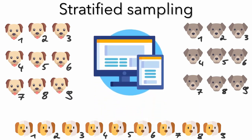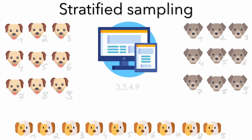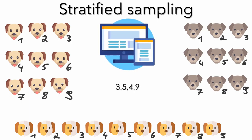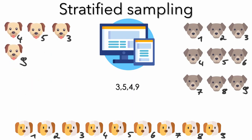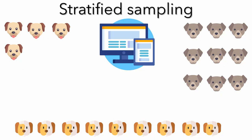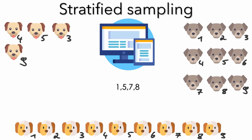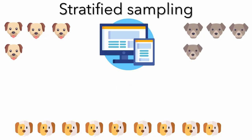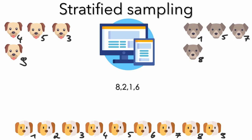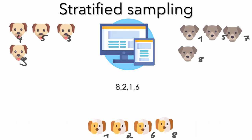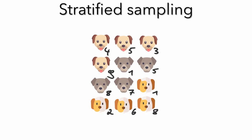Now every dog got a number and we can use simple random sampling to choose the dogs without any bias. These are our first numbers. We group them by their numbers, and now the same for the rest. Now we have got our sample. It is randomly chosen and we know that we got a similar number of each dog breed.